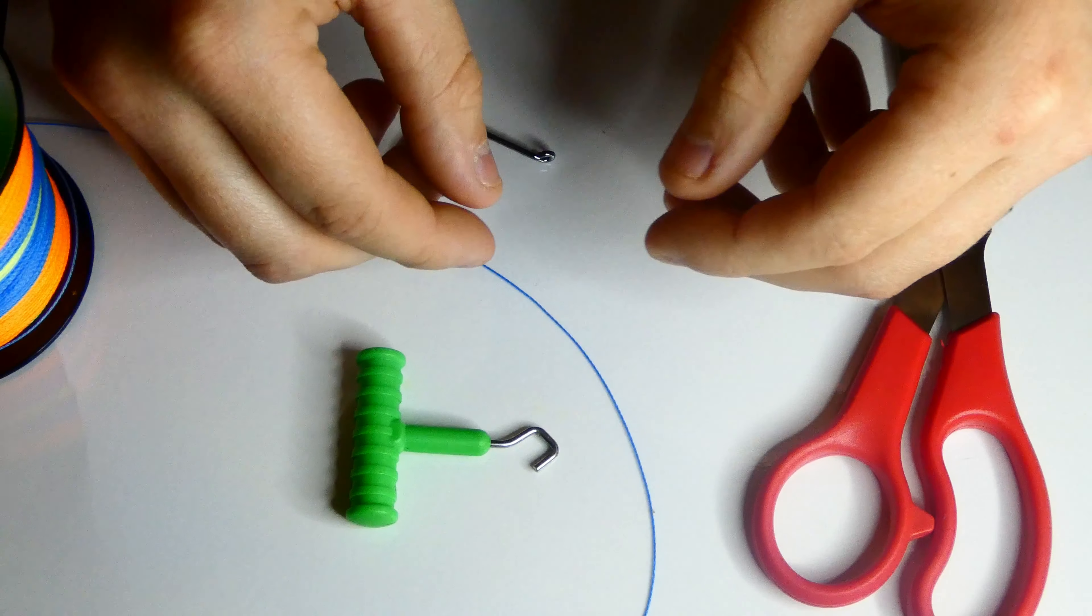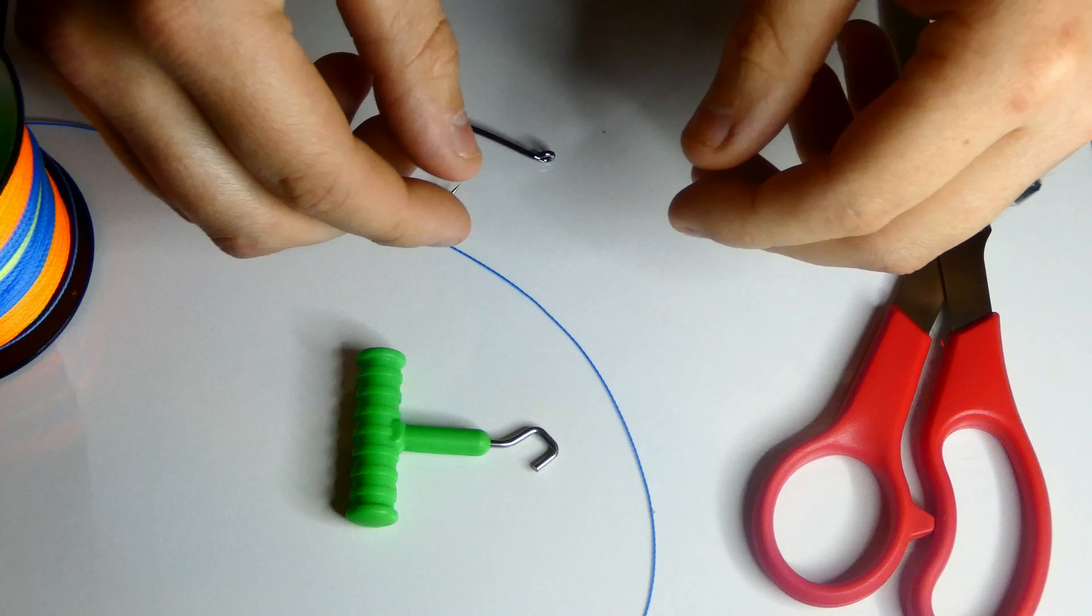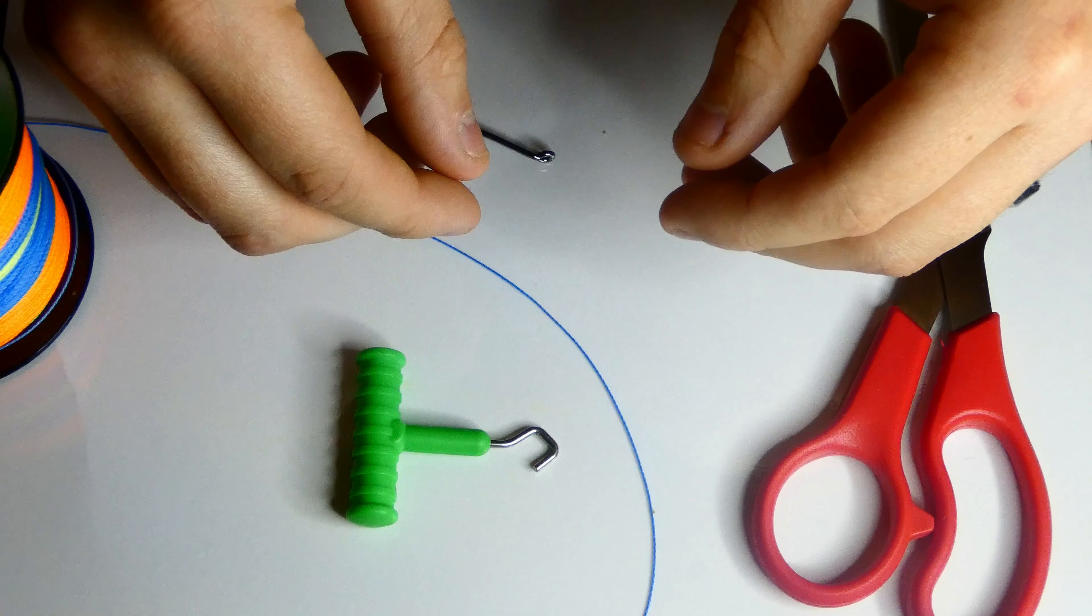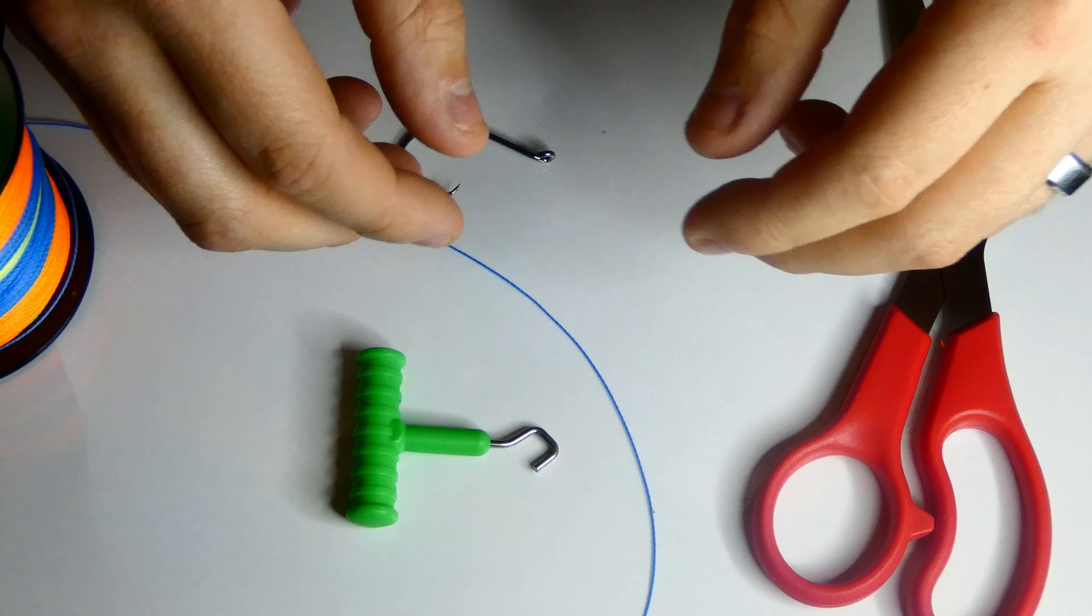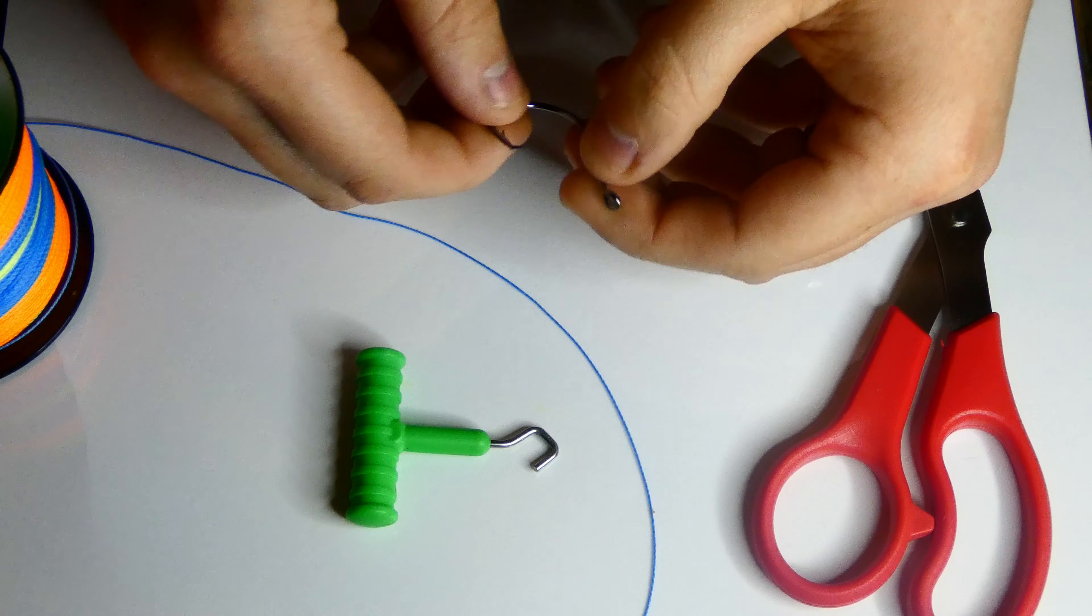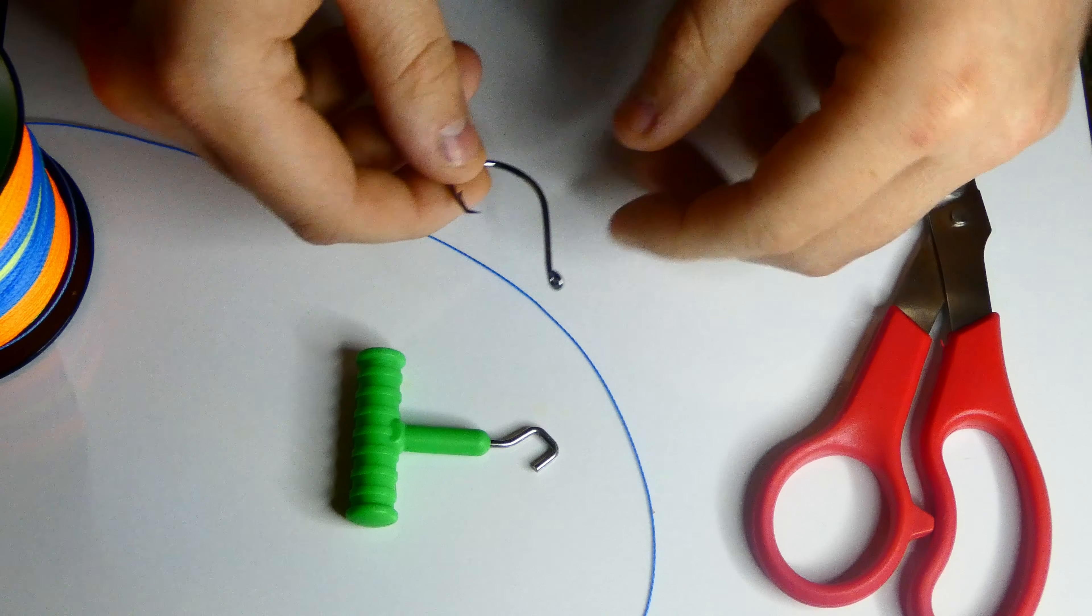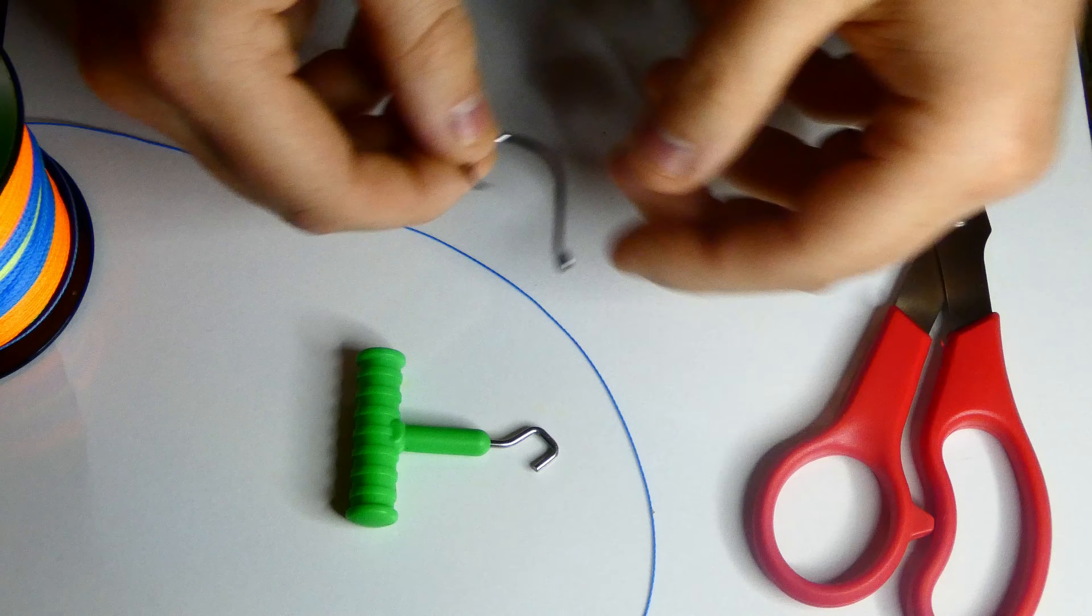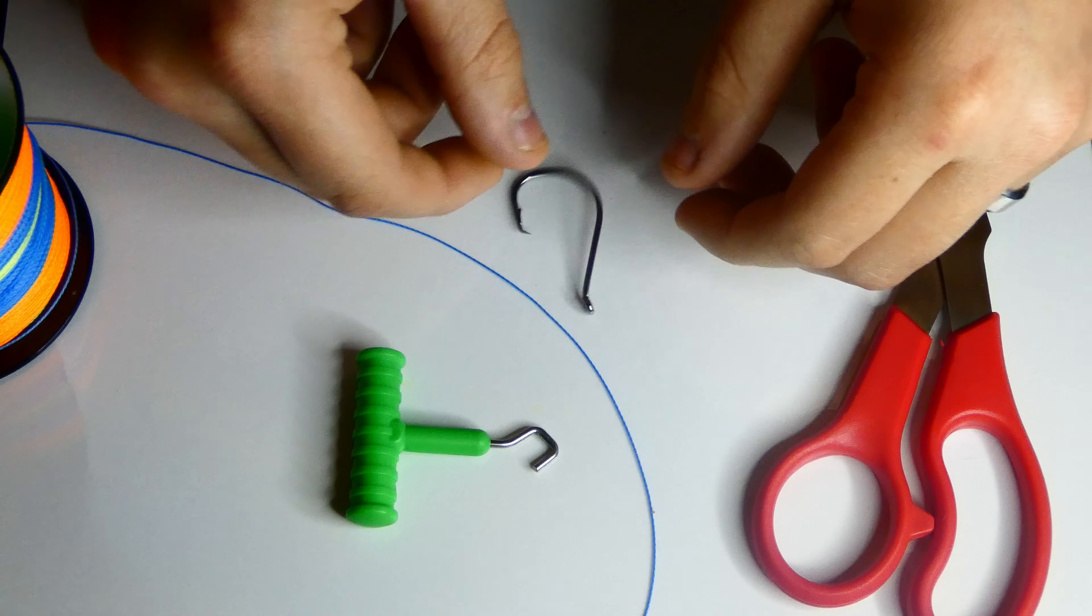Hey what's up guys, Robert here with Carp Tackle USA. Today I'm going to be showing you the strongest knot that you could possibly use on a hook, especially if you're trying to catch huge catfish or huge carp. This knot is always going to hold up no matter what.